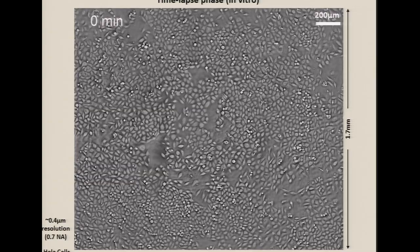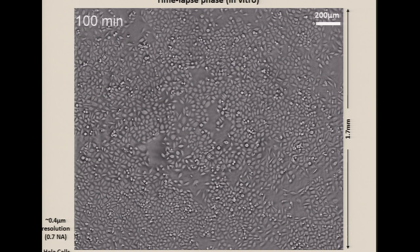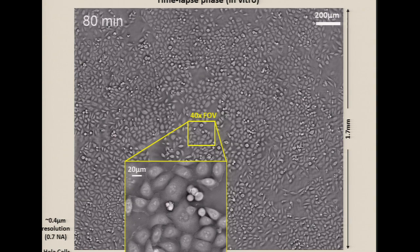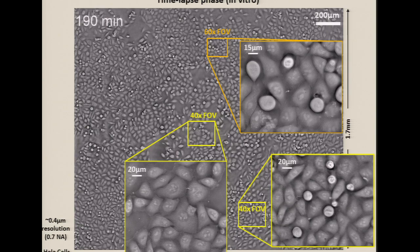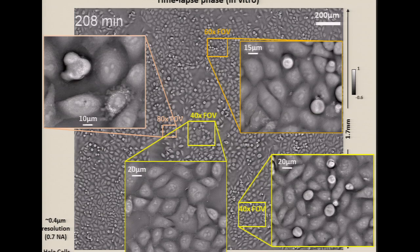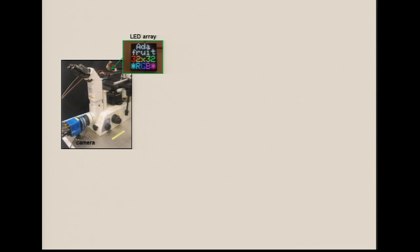This leads us to real-time Fourier ptychography. We can get a very large field of view and zoom in to look at rare events happening at the subcellular level — these are HeLa cancer cells, and you can see them divide. This is over the course of a few hours, and we're really pushing the limits of real time.